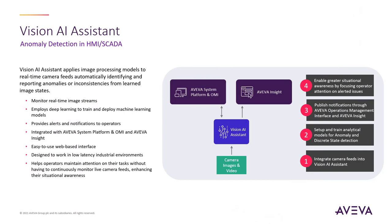Vision AI Assistant allows you, our customers, to quickly and easily use existing camera feeds or good images and videos to train AI models, which can then automatically generate an alert when the camera sees something that deviates from what's expected, effectively turning that camera into a visual sensor and providing you valuable insights to the operation of your production facilities, process lines or other automated and monitored equipment.